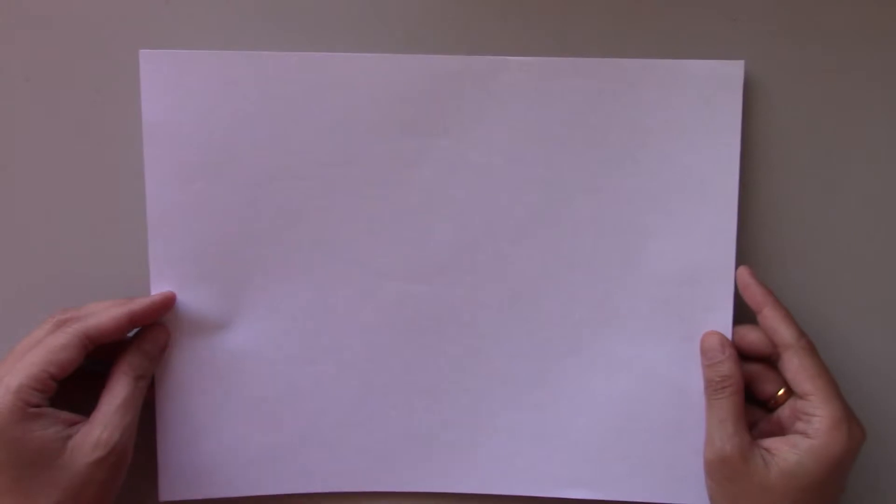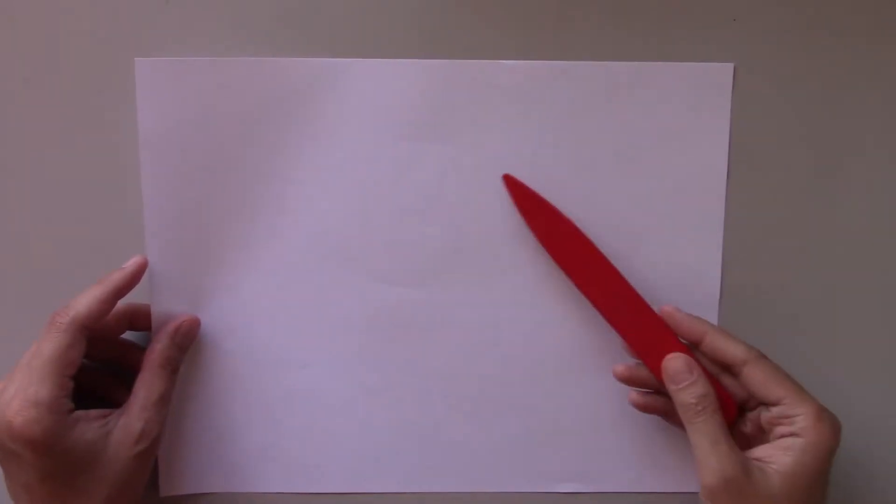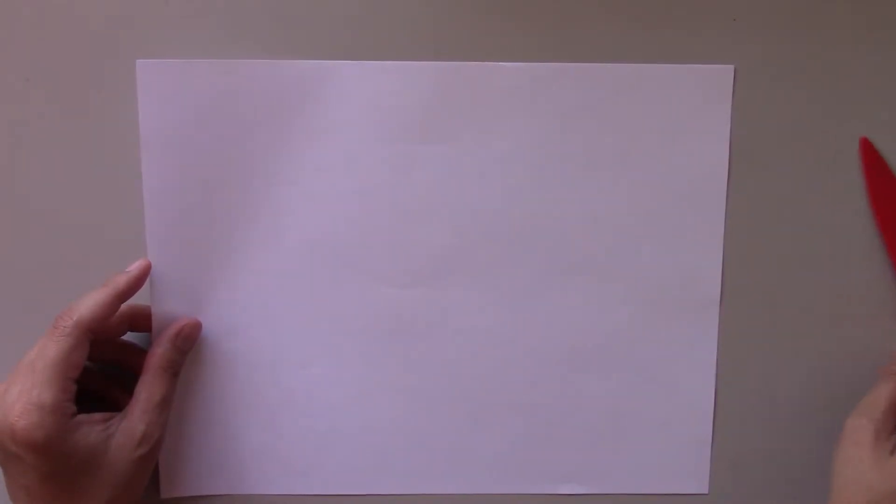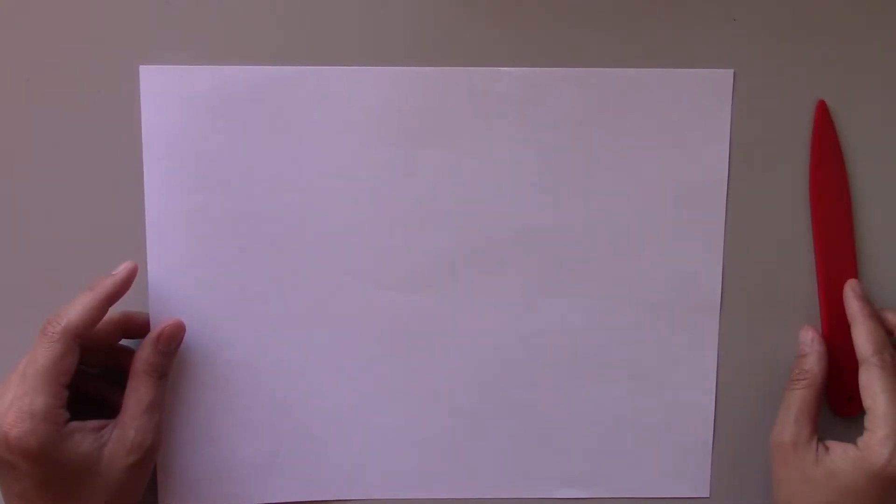Take a sheet of paper 8½ by 11 inches. You can use a bone folder, ruler, or butter knife to score to produce a well-defined crease.